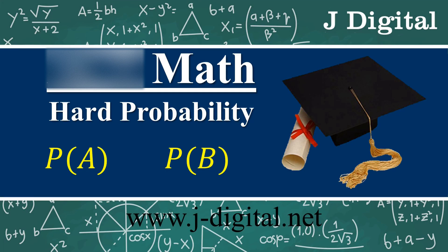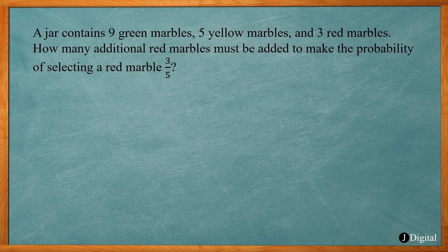In this video we're going to talk about hard probability problems you might find on the ACT math section. The first problem: a jar contains nine green marbles, five yellow marbles, and three red marbles. How many additional red marbles must be added to make the probability of selecting a red marble three-fifths? We're dealing with probability: the number of favorable outcomes divided by the total possible outcomes.